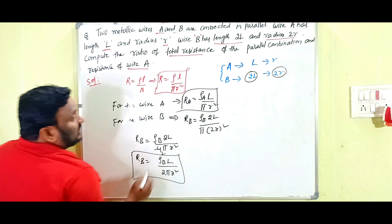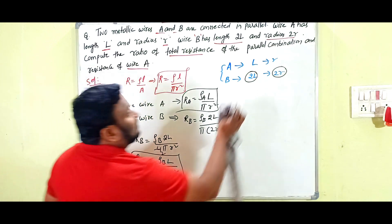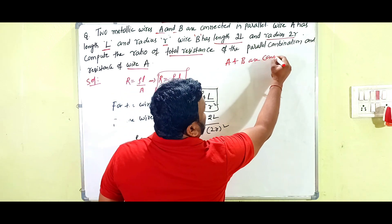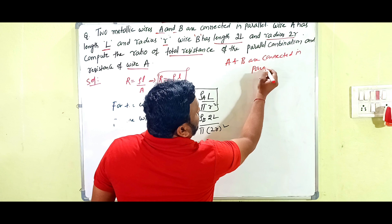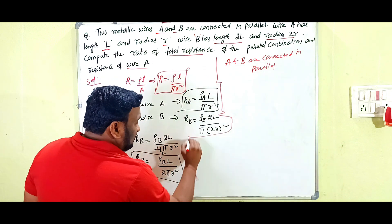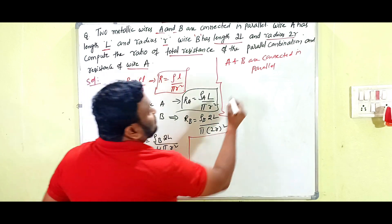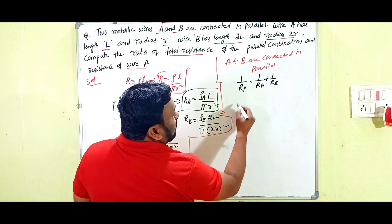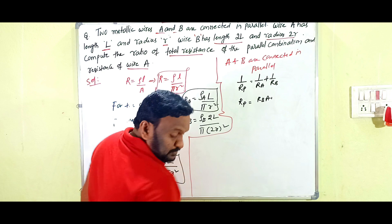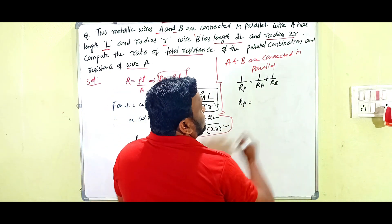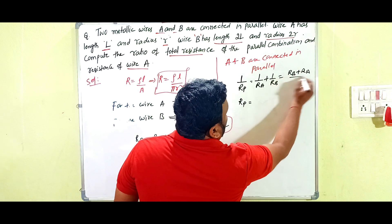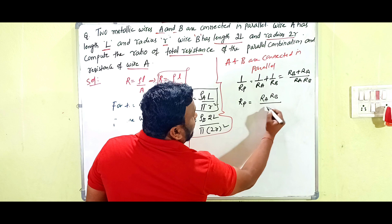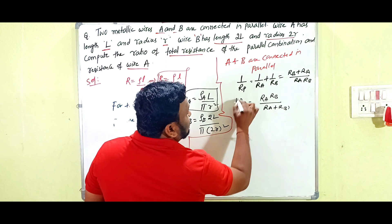Wires A and B are connected in parallel. For a parallel combination, 1/R_P equals 1/R_A plus 1/R_B. From this, R_P equals R_A times R_B divided by R_A plus R_B. We will now substitute the values of R_A and R_B into this formula.